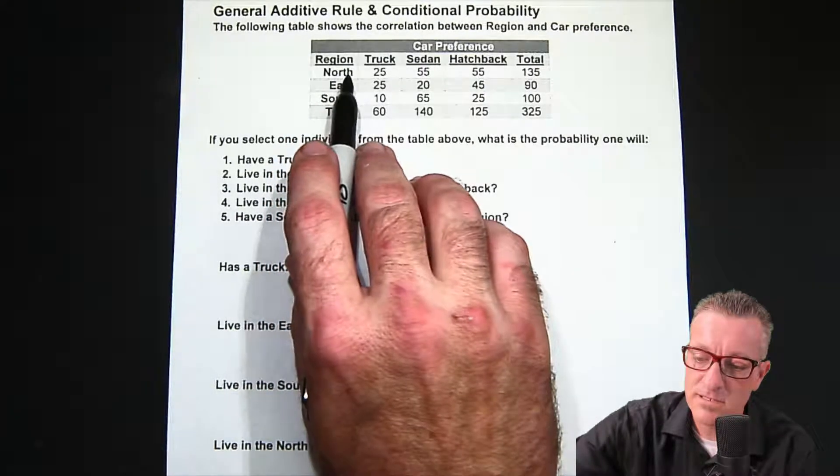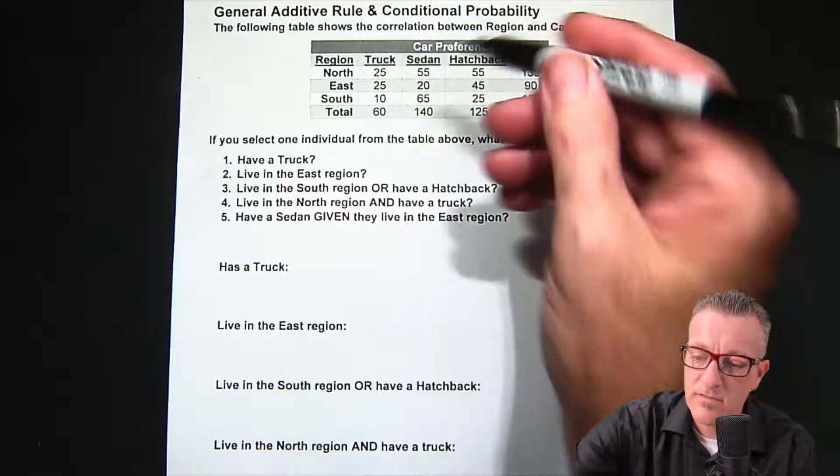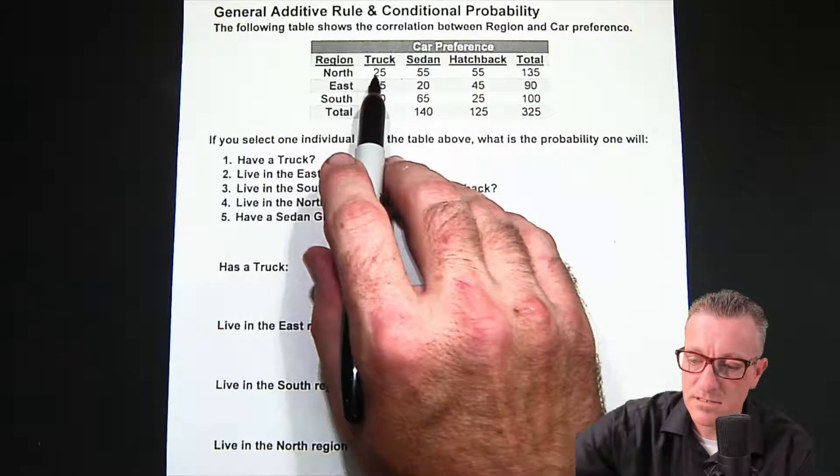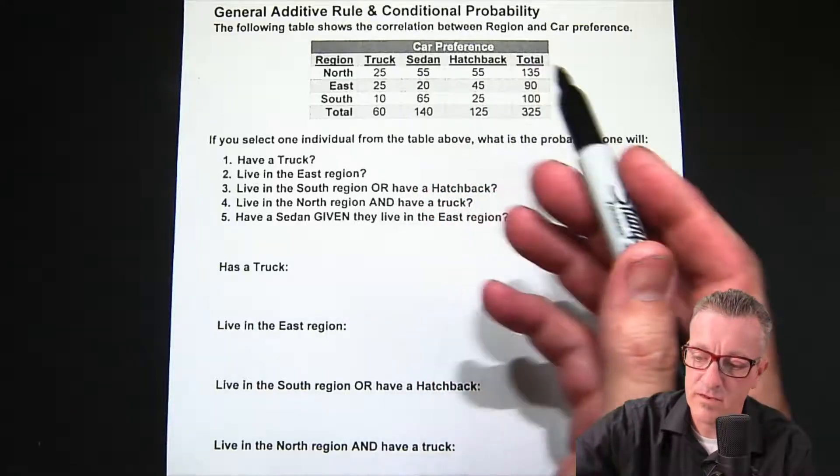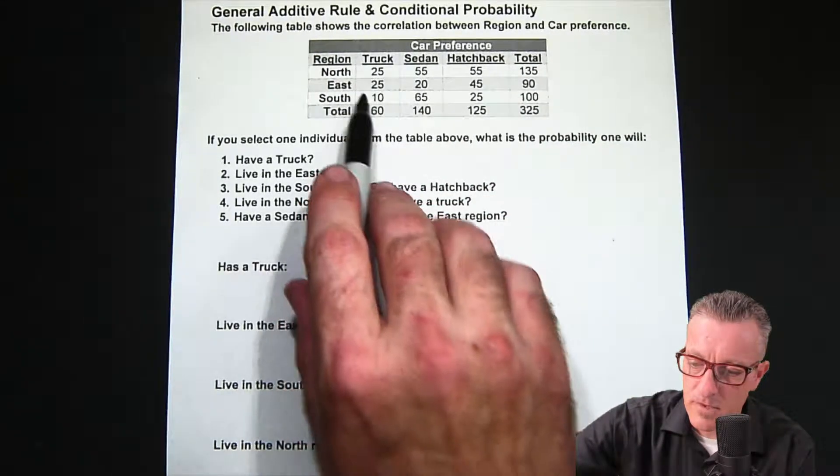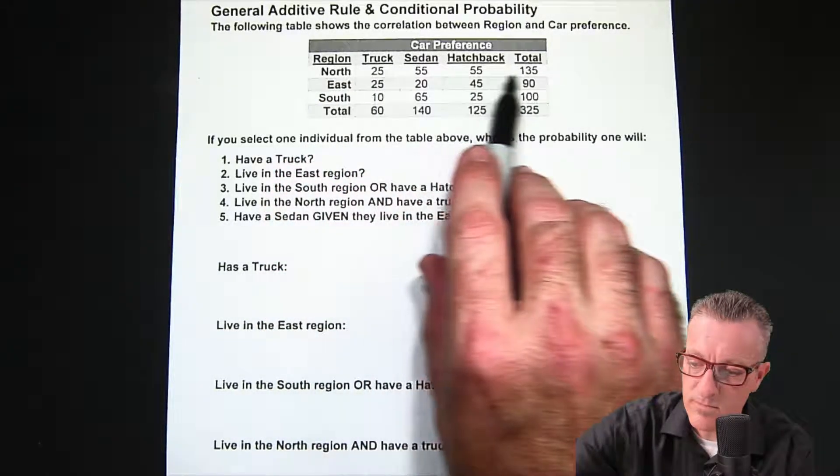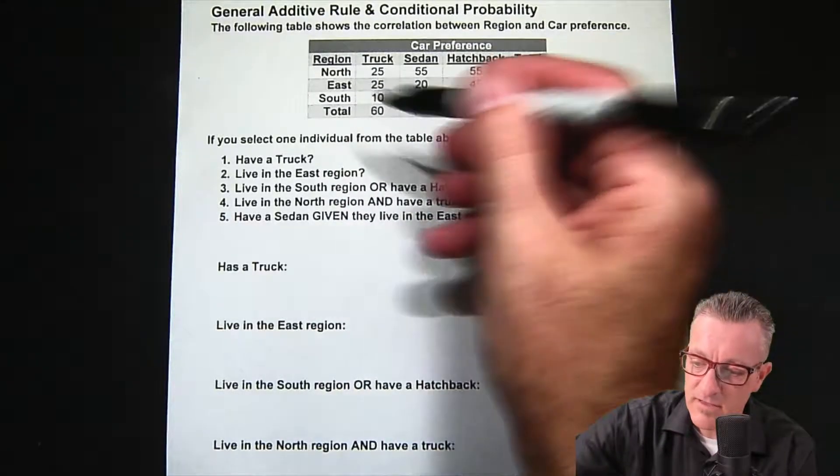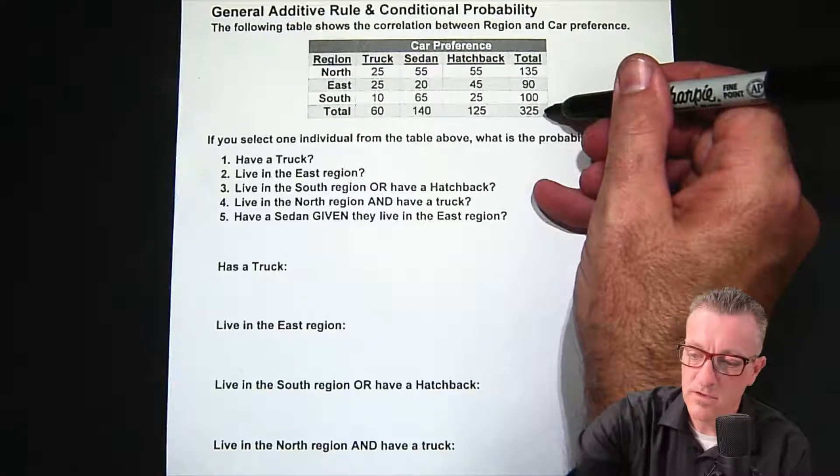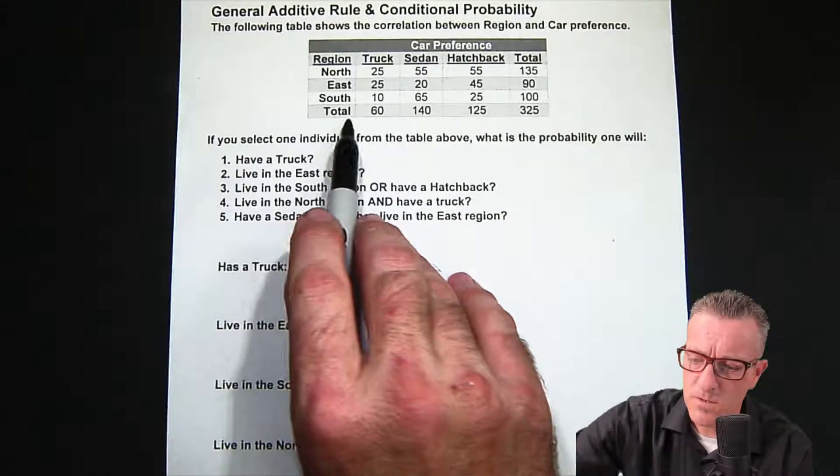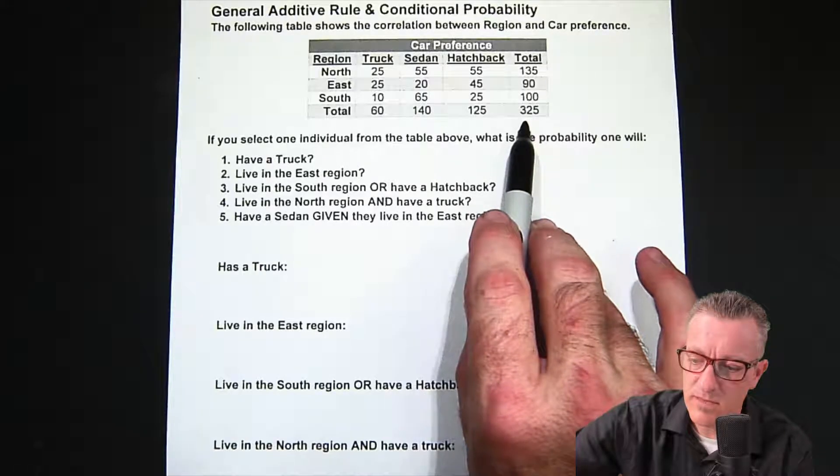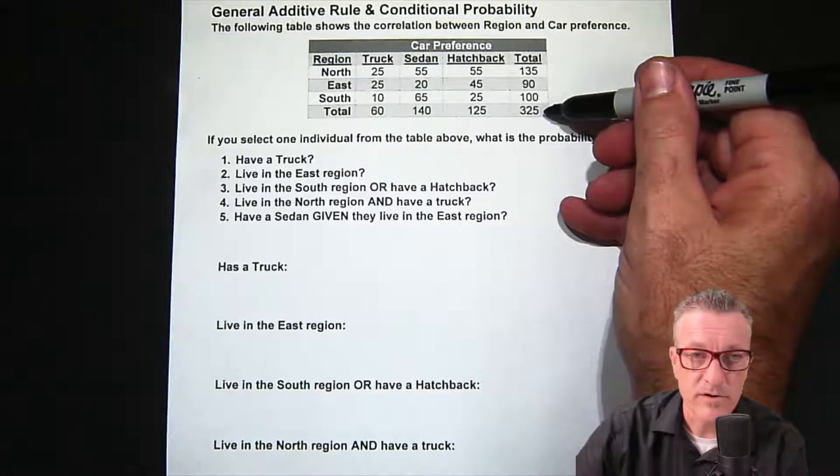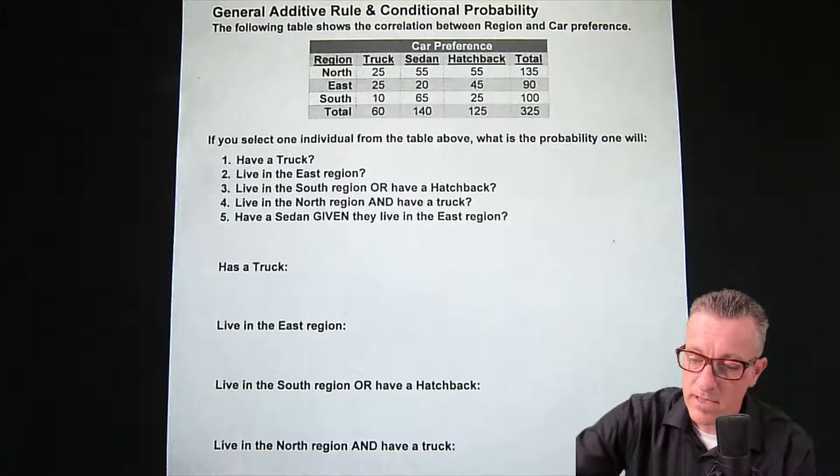North, East, South go across, and then the vertical columns are the types of vehicle choices - truck, sedan, hatchback, and then total. If you go and add up all of the North it ends up being the total on this far column, all the East is this total figure, and then down the bottom corner it's the grand total of all of them. Both the total going across horizontally ends up equaling 325, and then vertically going down it ends up equaling 325. So that's our grand total.